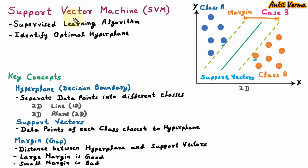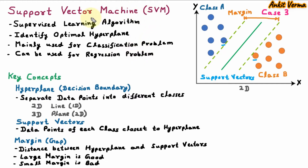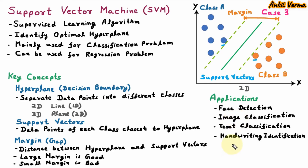Support vector machine is mainly used for classification problems, where we classify different things into classes. SVM can also be used for regression problems, where we predict things and do forecasting. But SVM is mainly used for classification problems. There are various applications of support vector machine, such as face detection, image classification, text classification, handwriting identification, and spam detection.